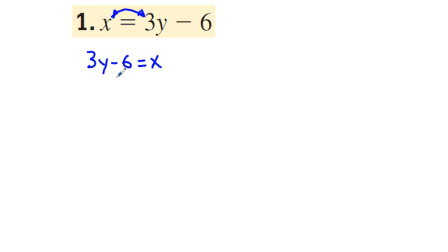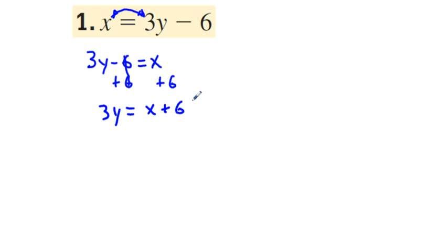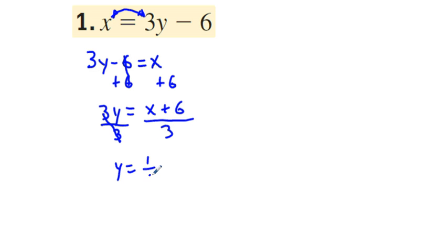If we add 6 to both sides of this equation, we have 3y equals x plus 6. Now we can divide both sides of this equation by 3, and we have y equals x over 3, which we can write as one-third x, plus 6 divided by 3 which is 2. So y equals one-third x plus 2.